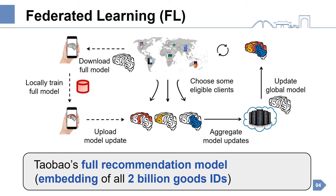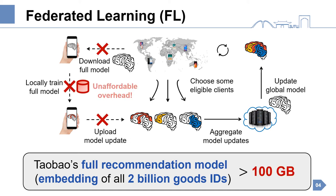However, in the Taobao context, the full recommendation model, which contains the embedding of 2 billion goods IDs, is larger than 100 gigabytes. This makes federated learning infeasible.